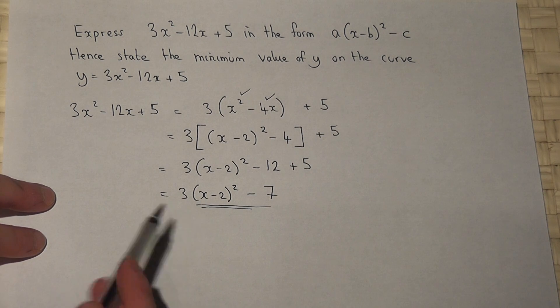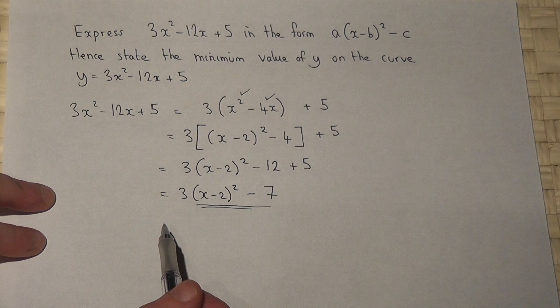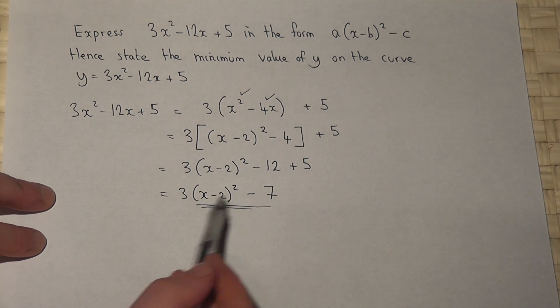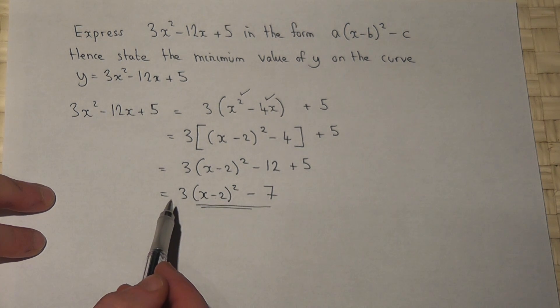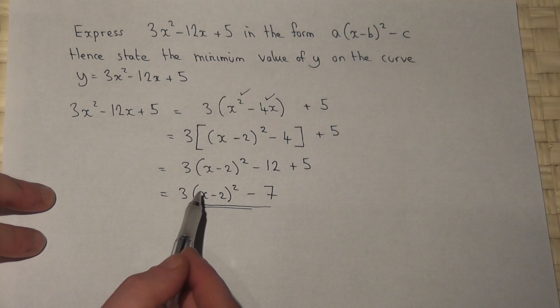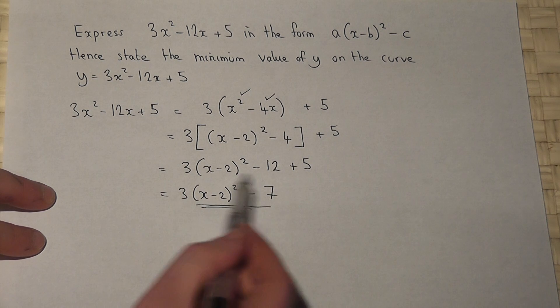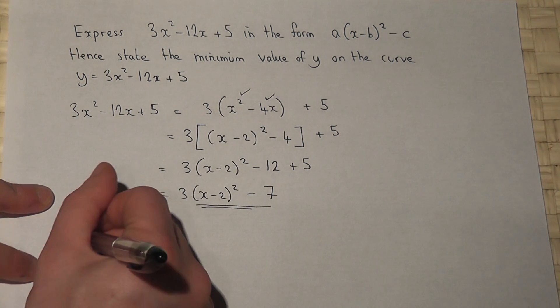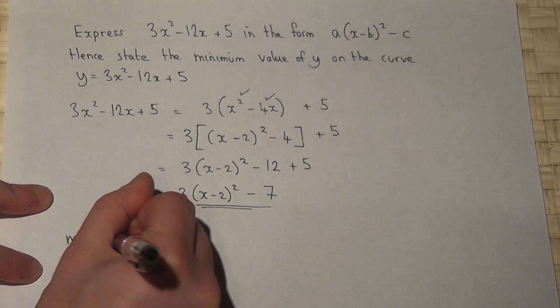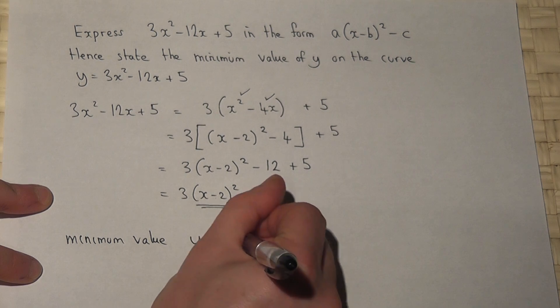It then asks you to state the minimum value of y. This expression here has got two parts to it. However, a squared term can only ever be positive. It can get as low as 0. So if that can get as low as 0, then if I take away 7, then this can get as low only as minus 7. So the minimum value will be y equals minus 7.